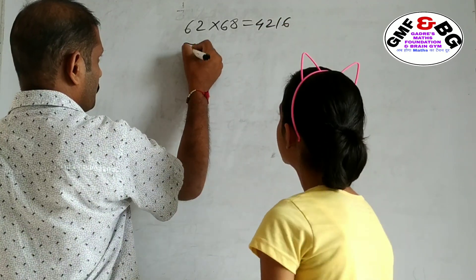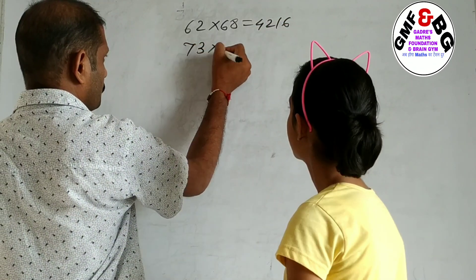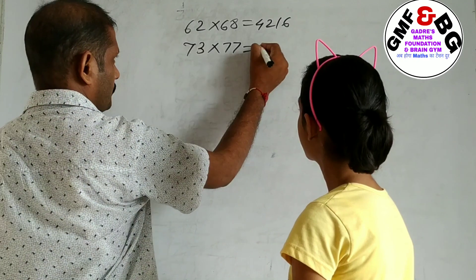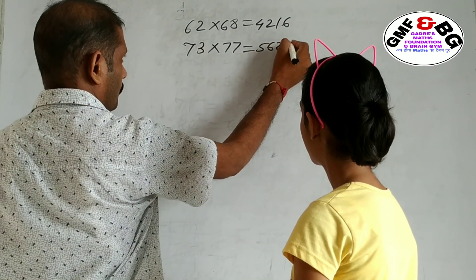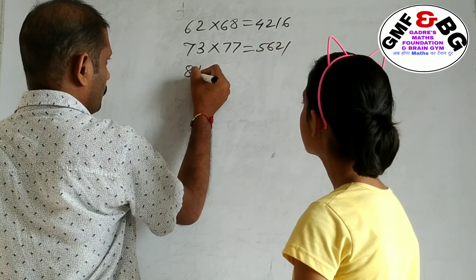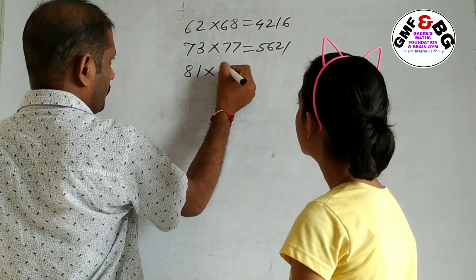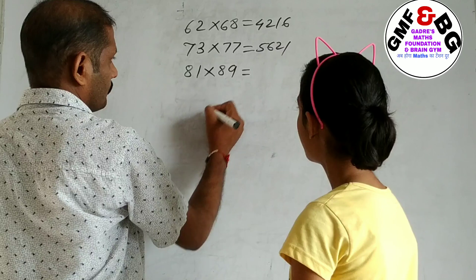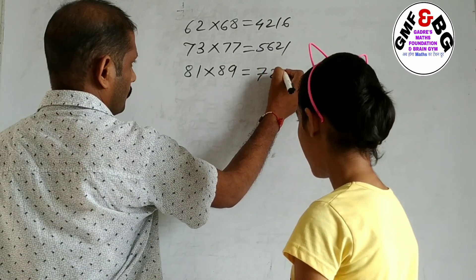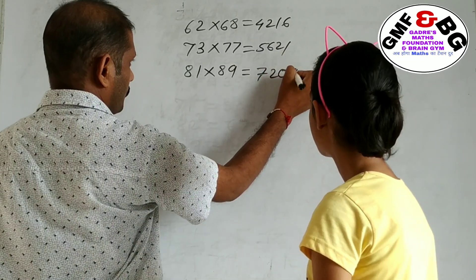Next: 73 into 77 equals 5621. Next: 81 into 89 equals 7209.